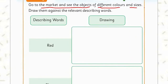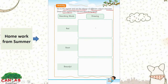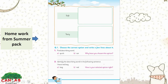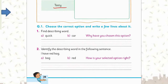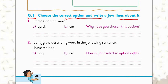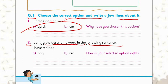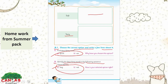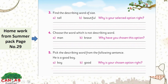This is your homework from the summer pack, page number 27. Go to the market and see objects of different colors and sizes, draw them against the relevant describing words. For example, if you see anything red you can draw it here and color it; if you see anything beautiful you can draw it here and color it. Page number 28: if you see something soft you can draw and color it. Page number 29: choose the correct option and find describing words; also identify the describing word in sentences like 'I have a red bag' — choose the describing word from the given options.